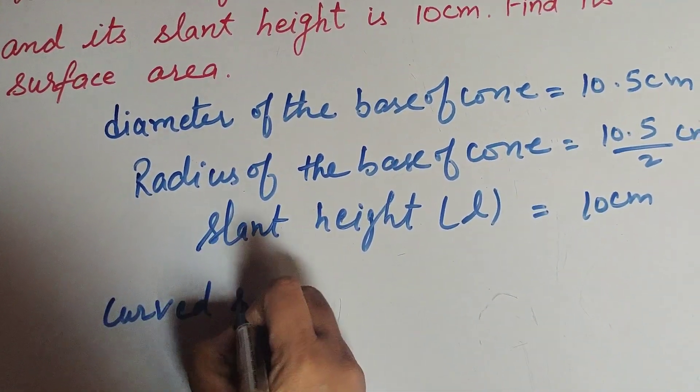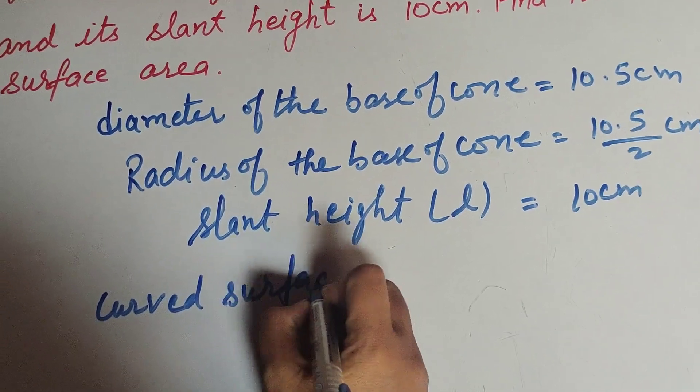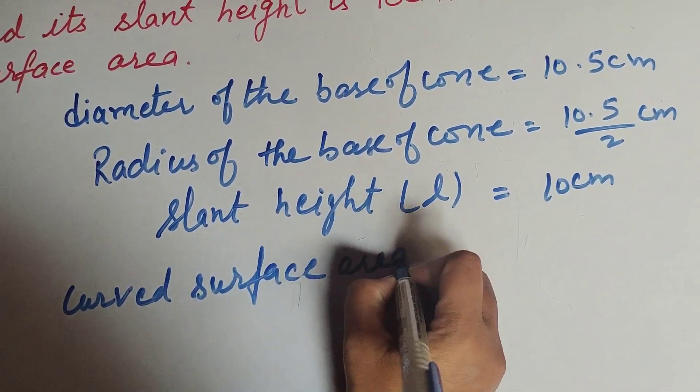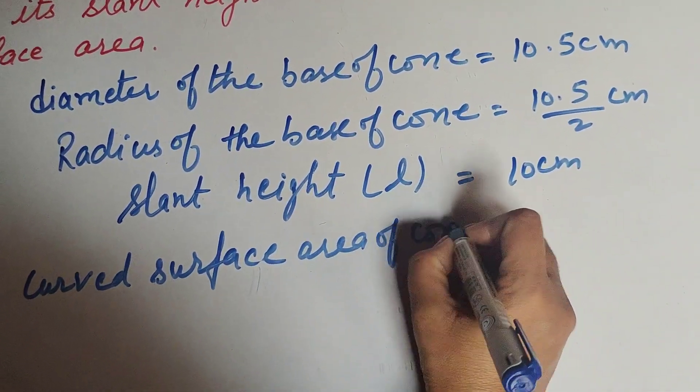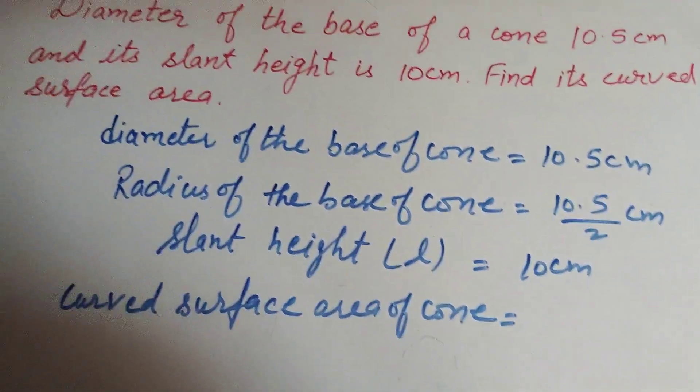We need to find the curved surface area of the cone. So we know the formula: curved surface area of a cone equals π times r times l.